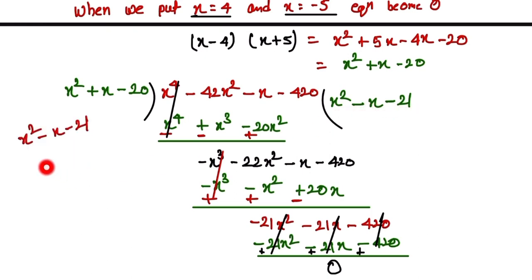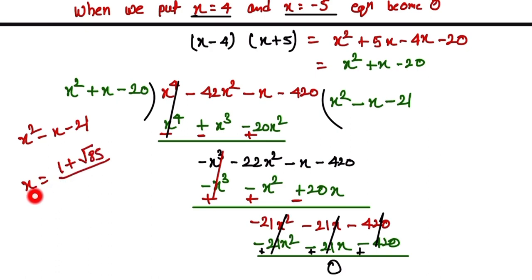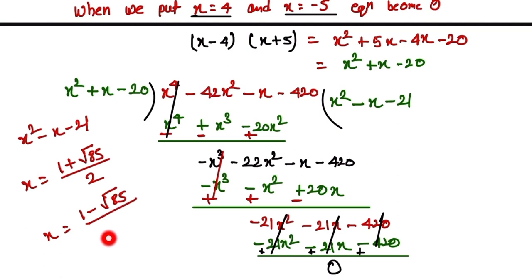So the second quadratic factor is x squared minus x minus 20. Solving this gives x equals (1 plus square root of 85) divided by 2 and x equals (1 minus square root of 85) divided by 2.